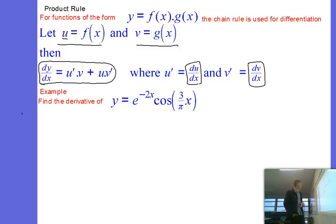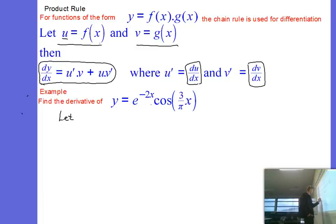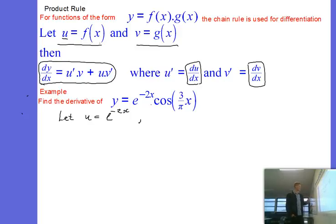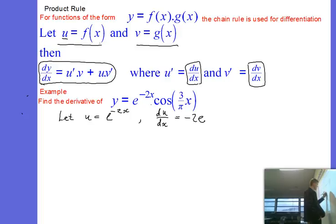Let's put the product rule to the test. We're going to differentiate y equals e to the power of negative 2x multiplied by cos of 3 on pi times x. First, let's identify the two functions and label them u and v. Let u equal the first function. Since we've found u, let's go ahead and work out its derivative. Then du dx becomes negative 2 e to the negative 2x.